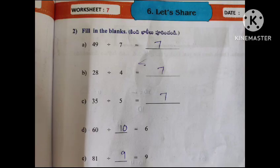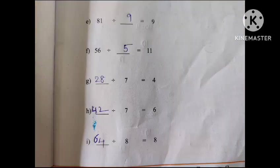Worksheet 7: Fill in the blanks. 49 divided by 7 equals 7 — calculate the division. 28 divided by 4 equals 7. 35 divided by 5 equals 7. 60 divided by 10 equals 6. 81 divided by 9 equals 9. 56 divided by 5 equals 11.